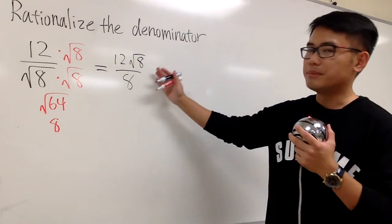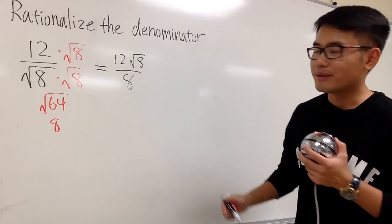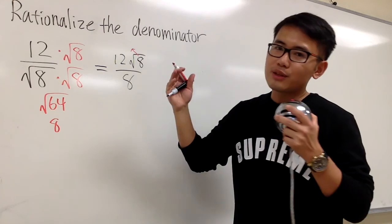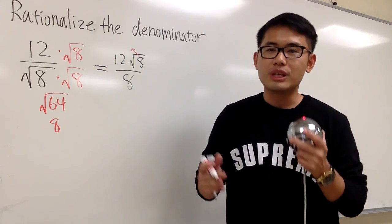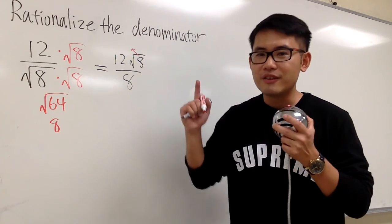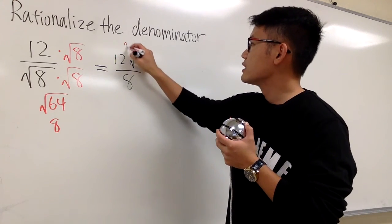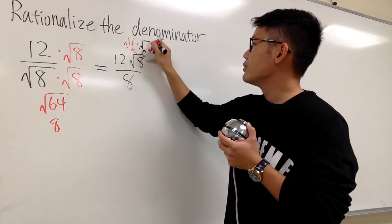However, this is not the simplest form because for square root of 8 here, we can break it down. And to do so, I'm just going to do it like this for you. We have to ask ourselves, what times what would give us 8? And we know, 4 times 2 would give us 8. And that's good because 4 is a perfect square.